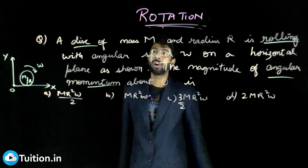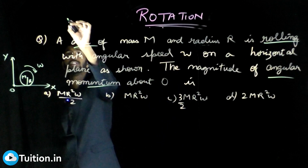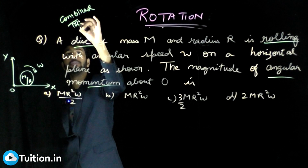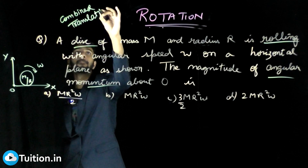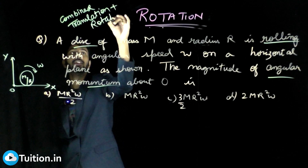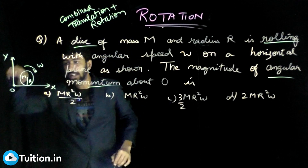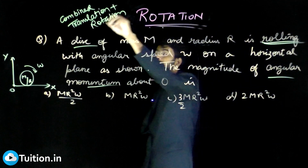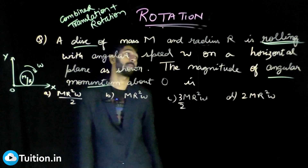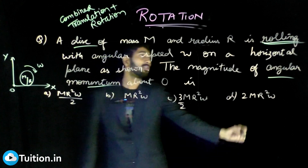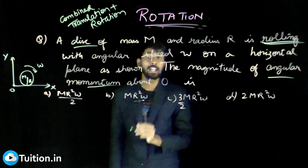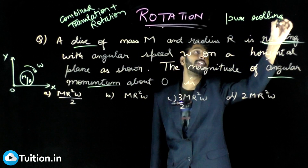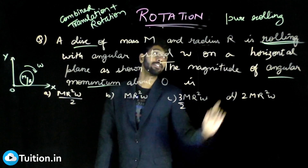This is the case of combined translation plus rotation — your body here is rotating and also moving ahead, because it is given that it is rolling. Rolling means it is combined translational plus rotational. Now, the moment the word rolling is given, you have to take the case of pure rolling — not slipping — even if they don't mention it.